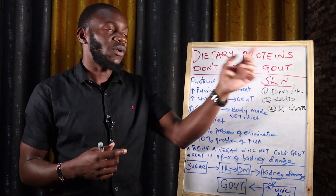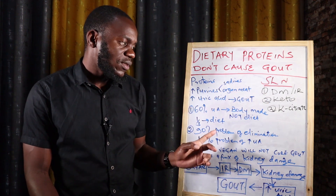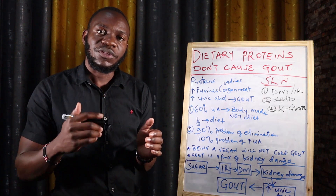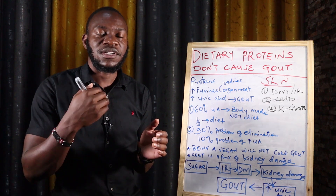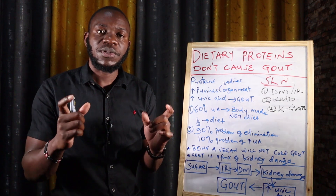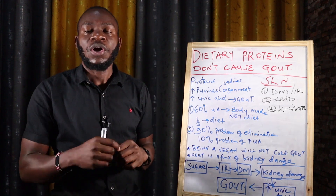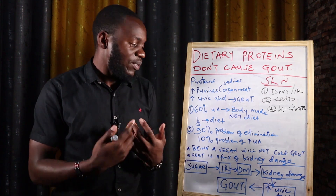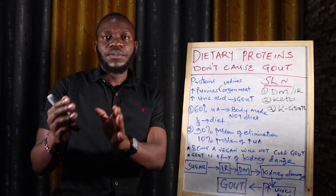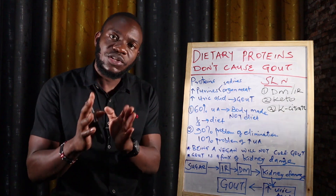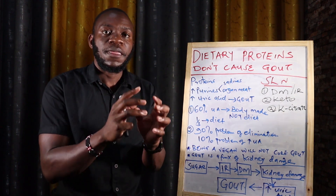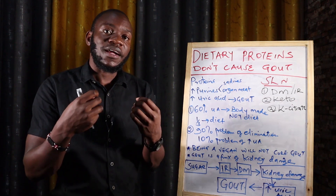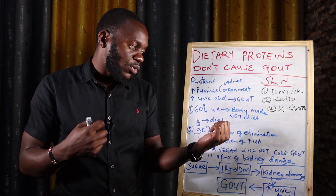What actually causes gout is a problem in the kidneys. Ninety percent of gout problems result from a problem in the elimination of already-formed uric acid — because uric acid is eliminated by the kidneys. Only 10% come from a problem in accumulation. The problem is not the uric acid being made; it is the failure to eliminate it through the kidneys.